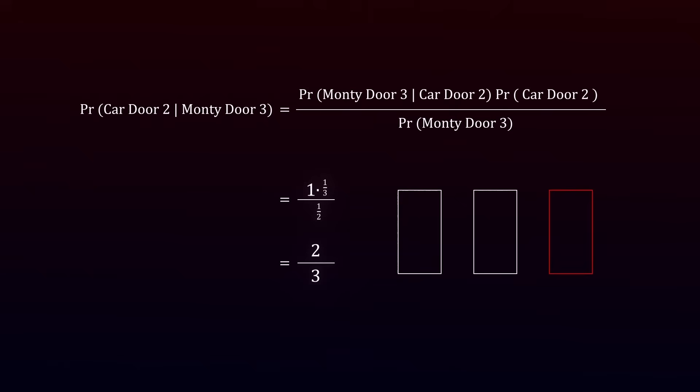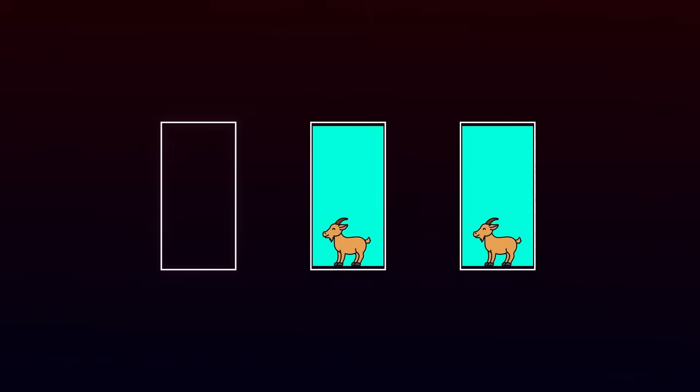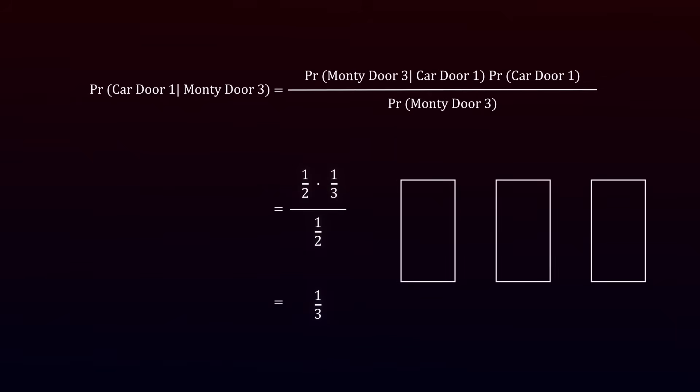You might wonder if the same logic applies to your original choice, door 1. It doesn't. While the second two probabilities remain the same, the first one, the probability that Monty opens door 3, given the car is behind door 1, is different, which is why the math leads to a different result. The probability that Monty opens door 3, given the car is behind door 1, is not 1. In this situation, Monty has a choice. He can open either door 2 or door 3. This means the probability of him opening door 3 is 1 in 2. Plugging this into the calculation confirms the car has a 1 in 3 chance of being behind your original choice. To truly understand this, it helps to walk through the process step by step at your own pace. Redoing the calculations yourself can make the logic much clearer.